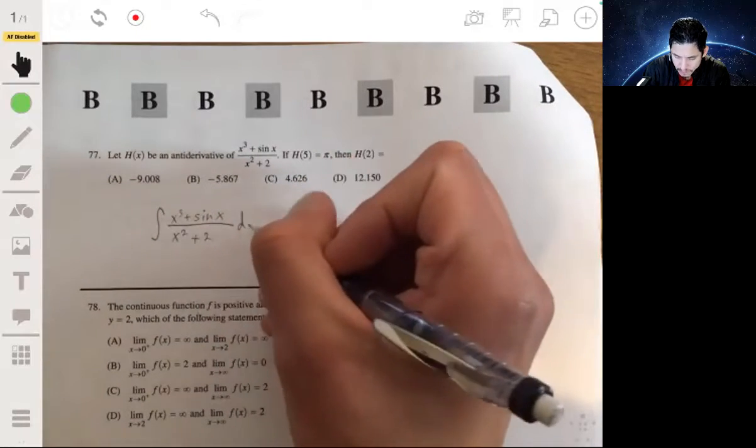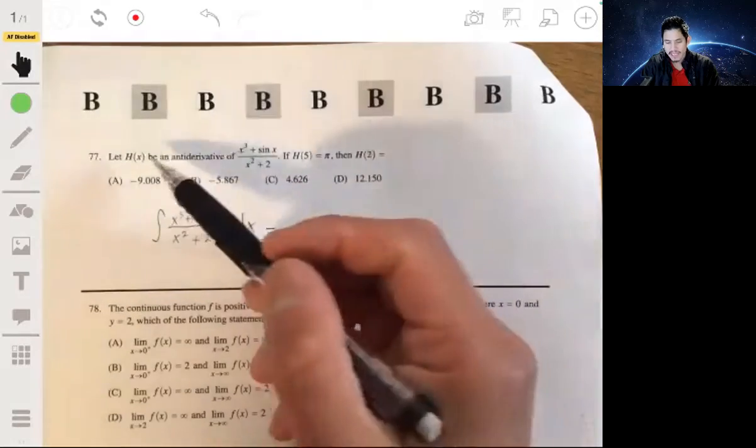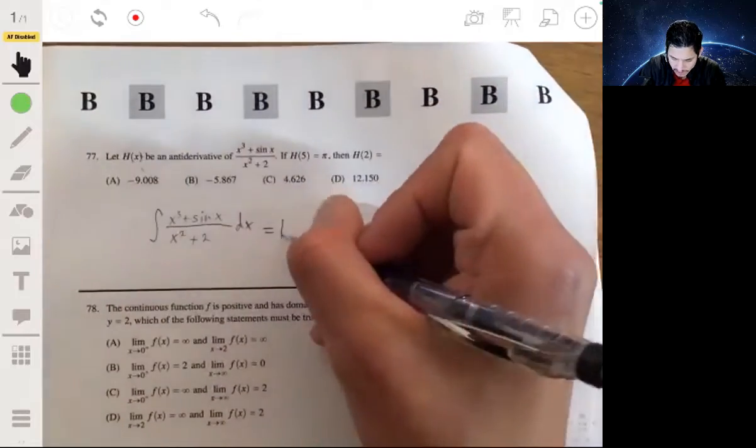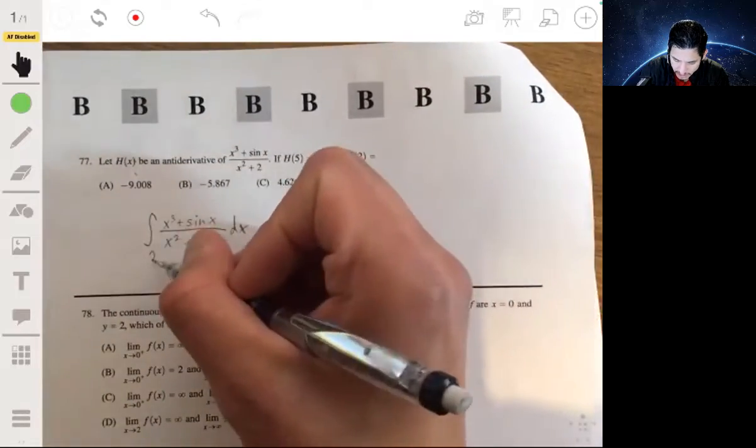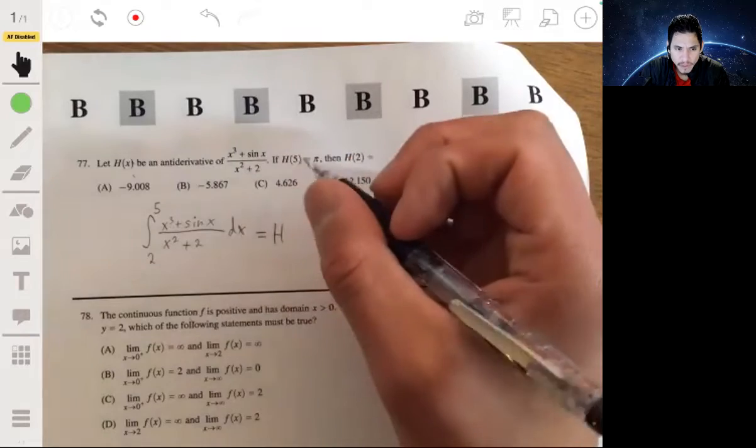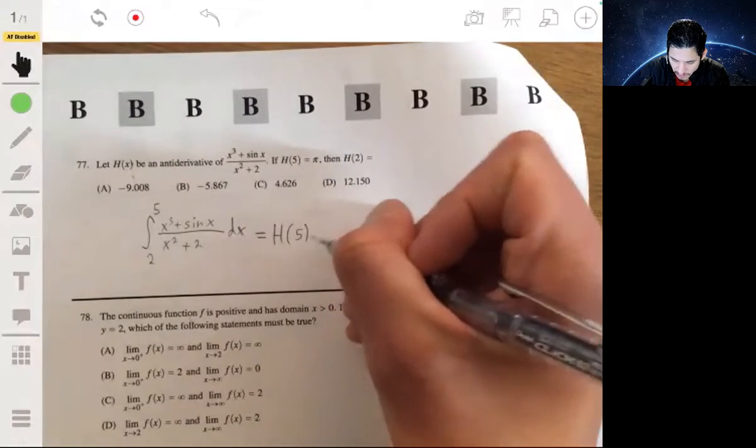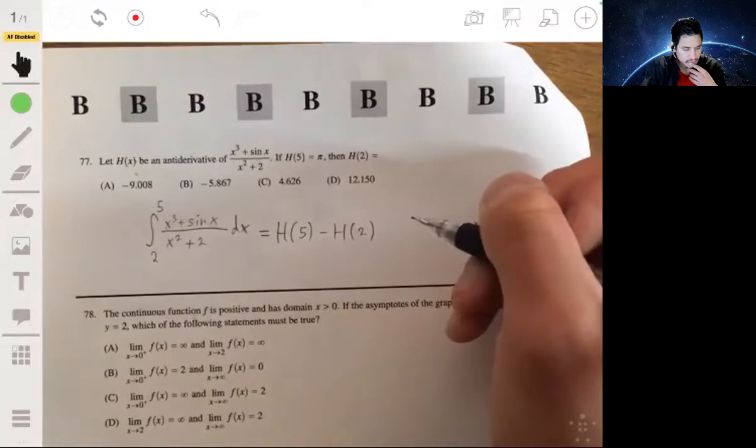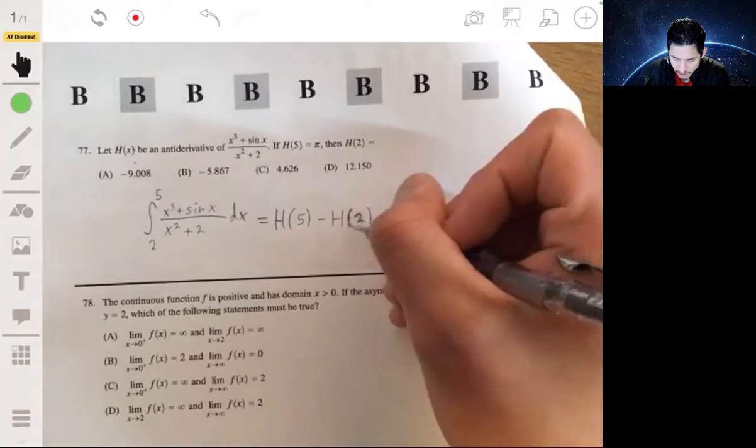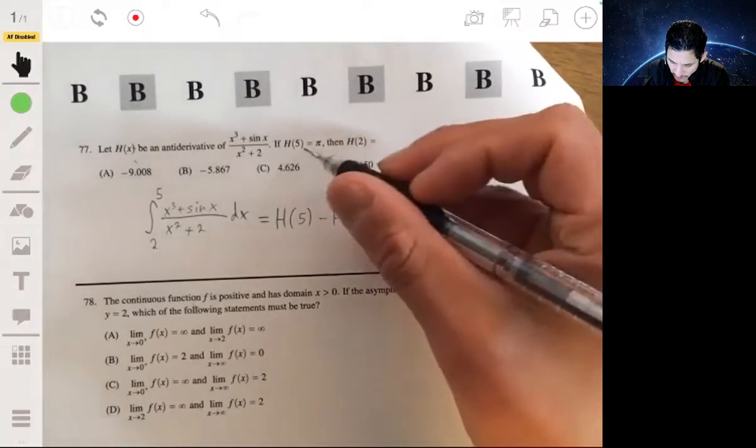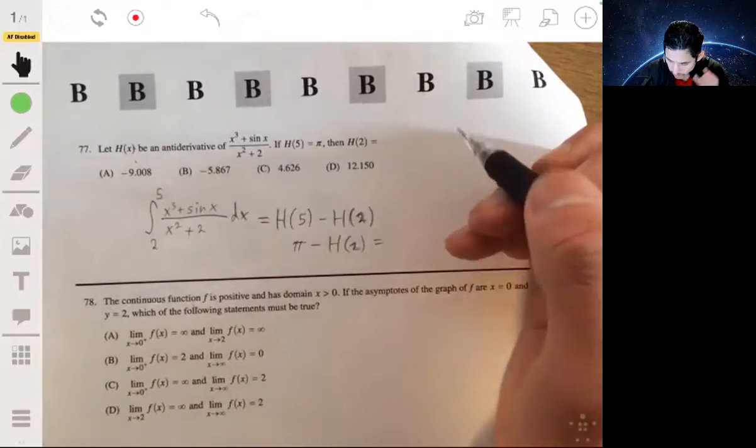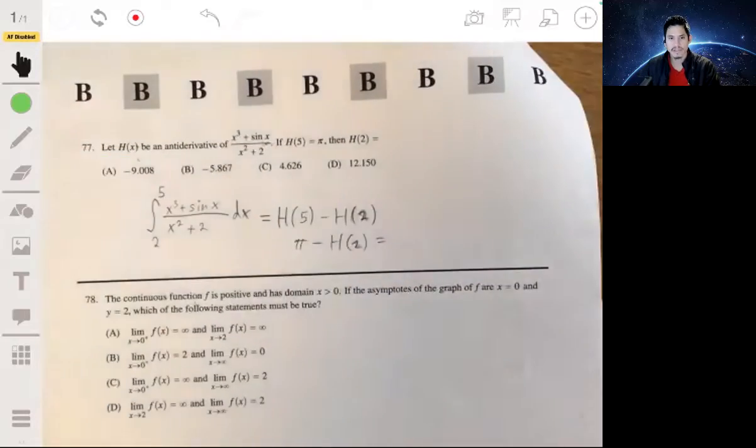Over x squared plus 2. Remember this is the anti-derivative of this, that means when you integrate this you're going to get large H of x. So let's look at the points 2 and 5. Let's integrate this from 2 to 5 because that looks like what we have to compare here. So integrating this would be equal to large H of 5 minus large H of 2. We have that H of 5 is pi, so pi minus H of 2, and we can integrate this with our calculator technology.